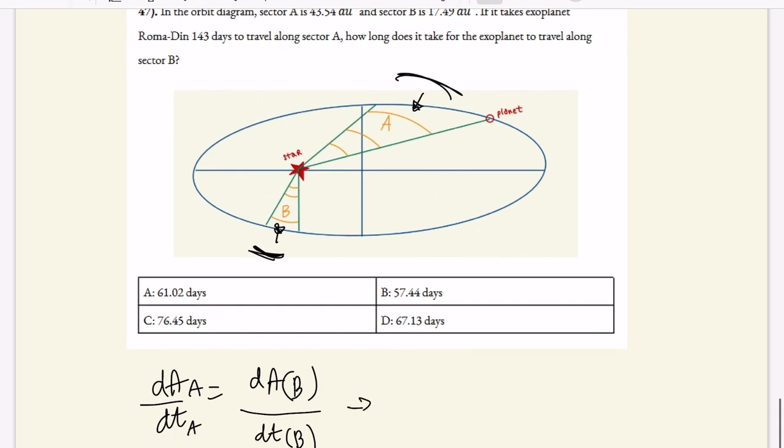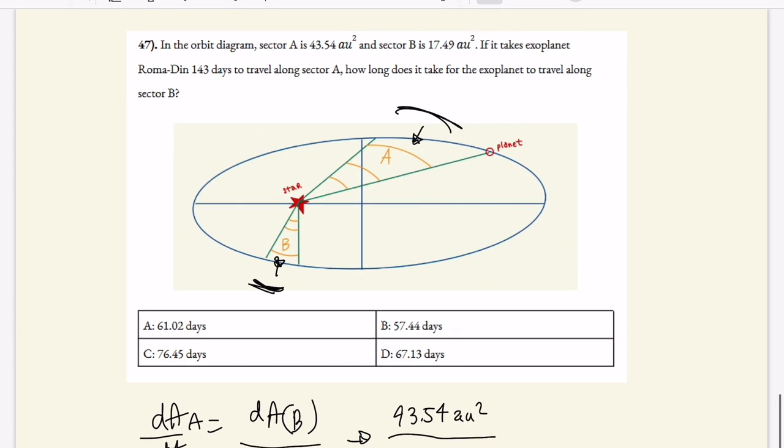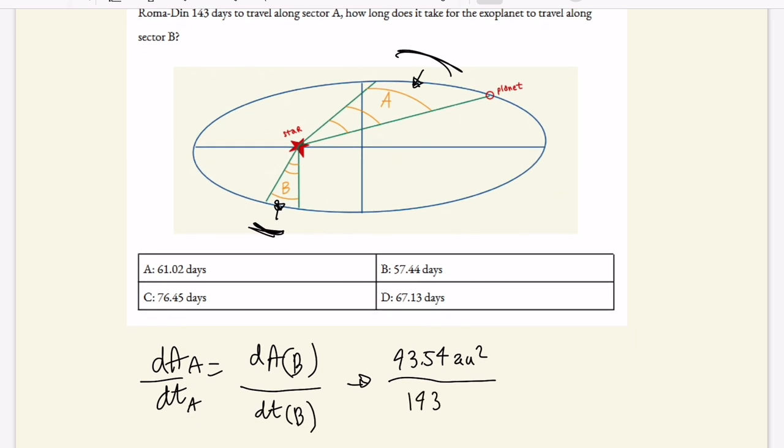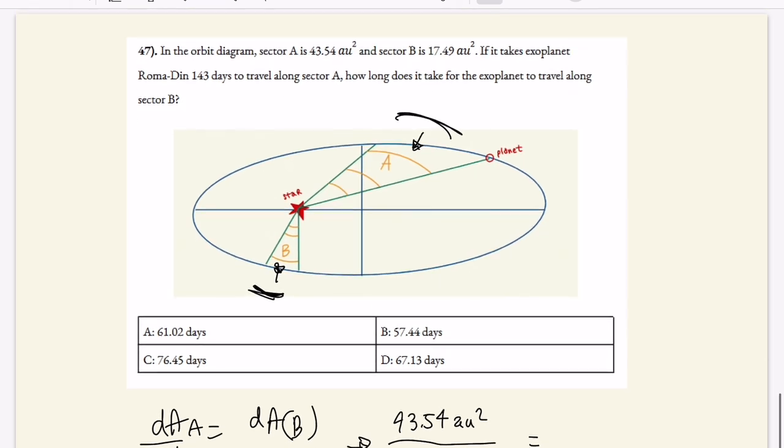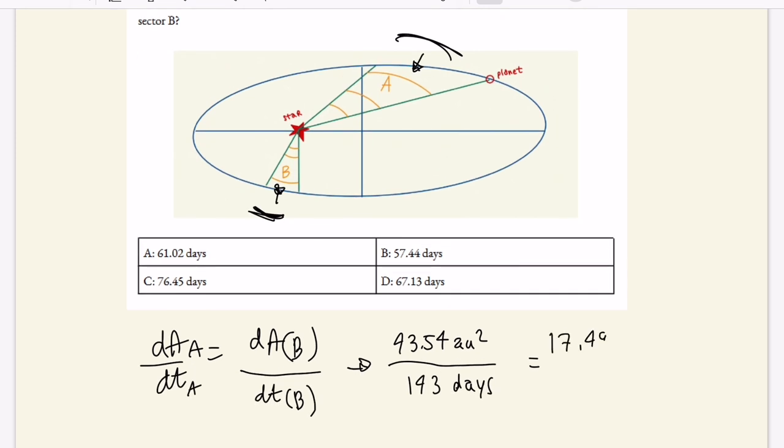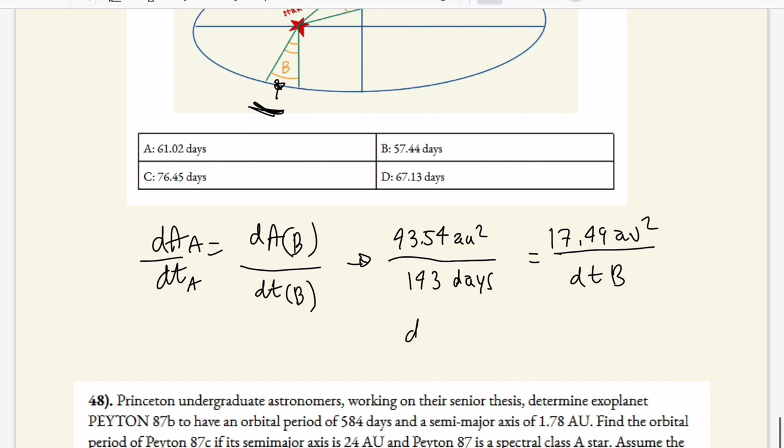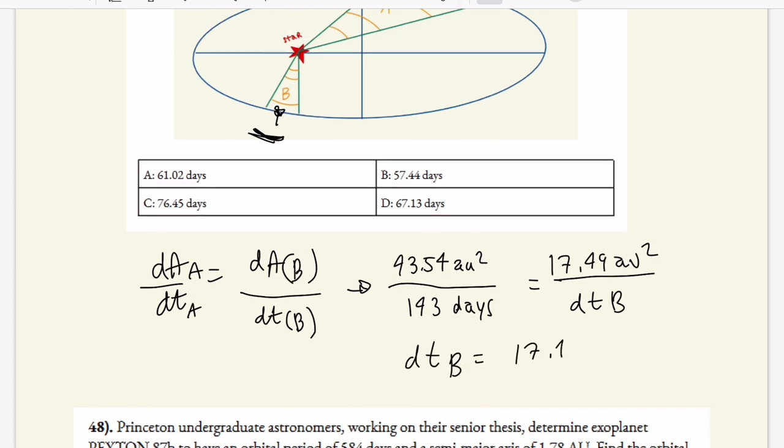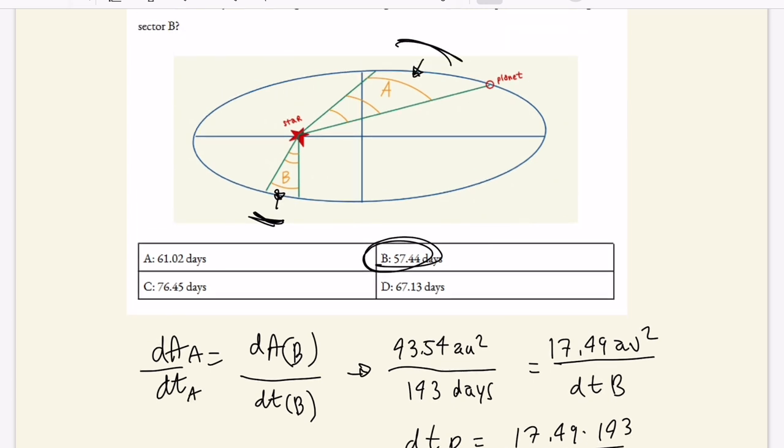Kepler's second law is very powerful. But anyways, if dA dt is a constant, let's consider we can create a proportion out of this. So we can say dA of A over dt of A is equal to dA of section B divided by dt of section B. So dA of A is 43.54 AU squared, dt A is 143 days. We can leave it in units of days. And then dA of B is 17.49 AU squared, and the time period is going to be dt of B. So we can solve for dt of B, 17.49 times 143 divided by 43.54. And we get 57.44 days, which is an answer choice. Quick little problem, but it's important to know Kepler's second law.